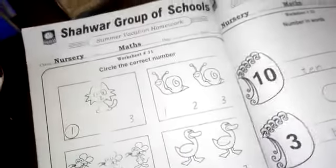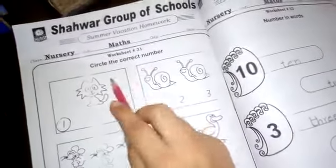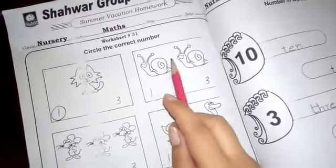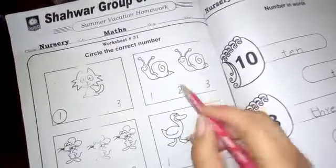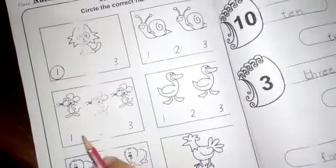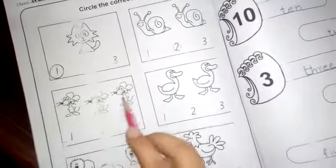Look at there, version number 31, nursery math, circle the correct number. What is this? This is the snails, and how many snails are there? One, two. So we write a circle on two. And what is this? This is a mouse, and how many mouses are there? One, two, three.